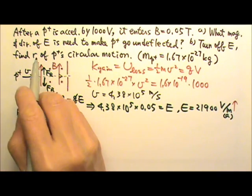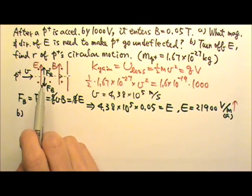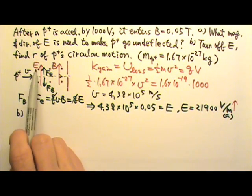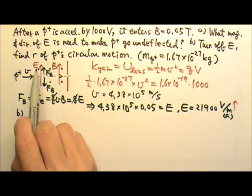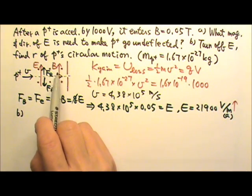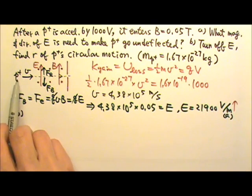Now in part B, we want to find the radius of the proton's circular motion after we turn off the electric field. If the electric field is off, there is only magnetic force acting on the proton.